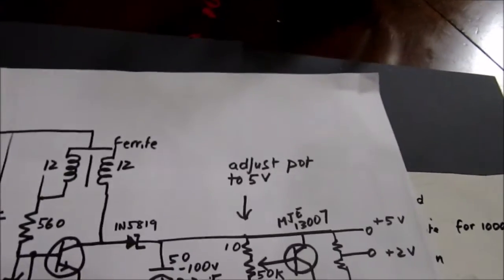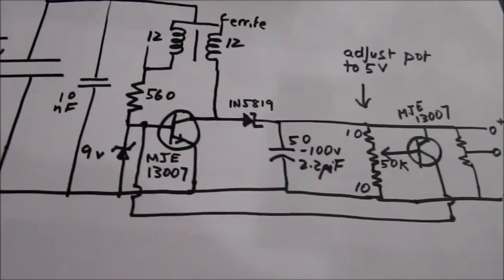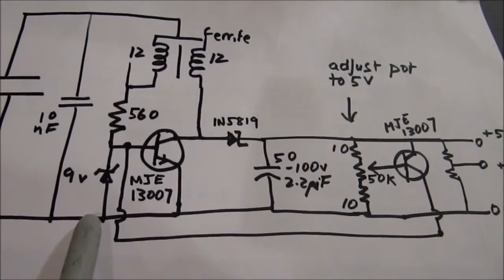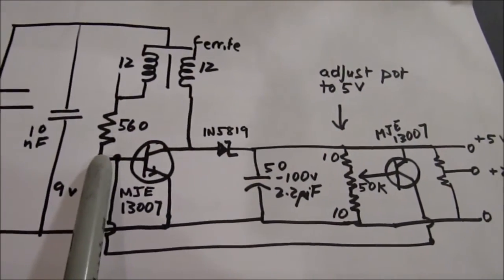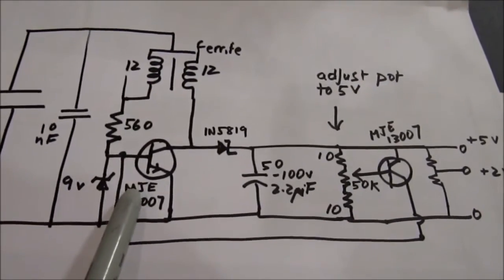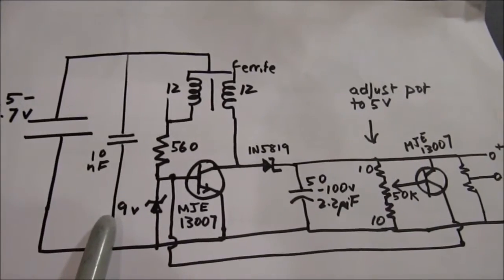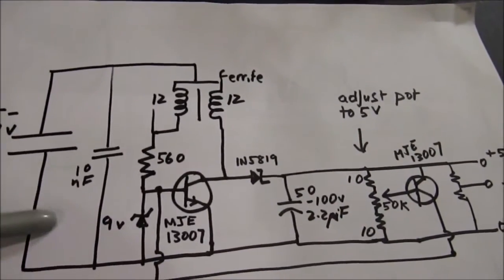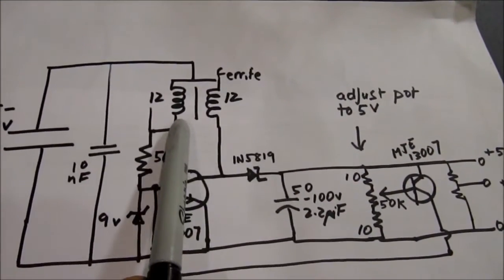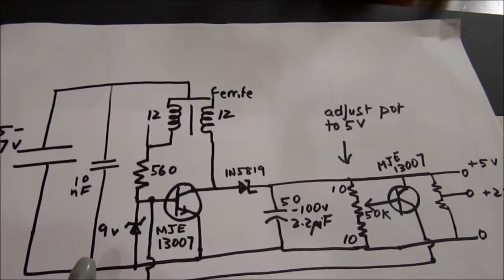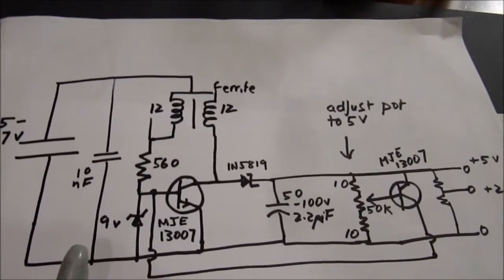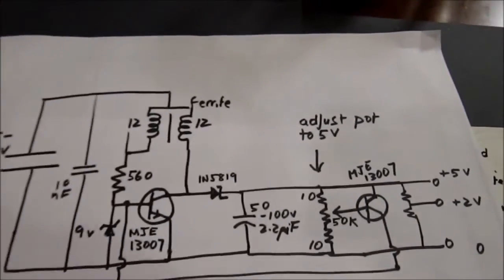Some modifications that I've made to this Joule Thief: I've added a little zener diode here, a 9 volt zener, to protect the base of that transistor from voltage spikes. And I've also added a 10 nanofarad capacitor right across this core here, effectively across that core there, to dampen any voltage spikes. And that seems to help with smoothing out the output.